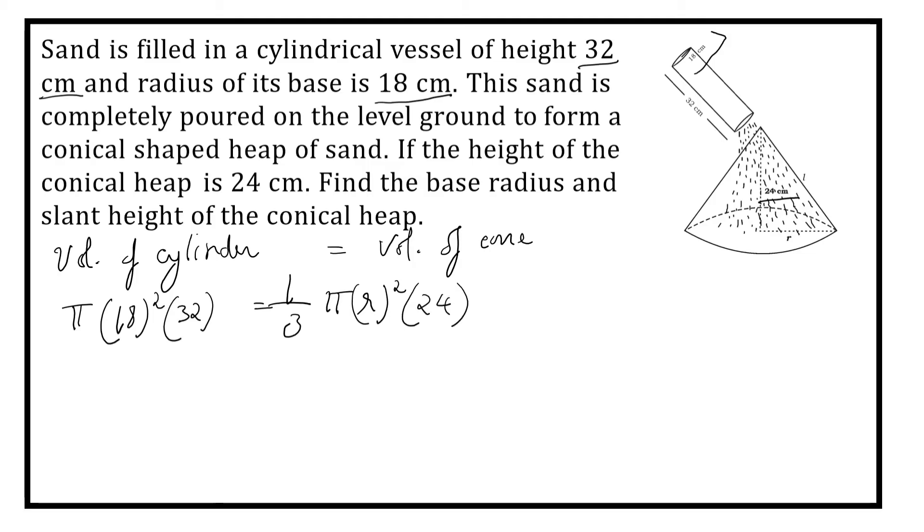Here we can cancel pi and pi in LHS and RHS. 3 sixes are 18. Here also you can simplify. If you know mathematics, you can easily solve it. 8 threes are 24. Both are in numerator, so you can cancel. 8 and 4, 2. Here you can write it as 18 square, 4 as 2 square is equal to. Here only radius square is left.